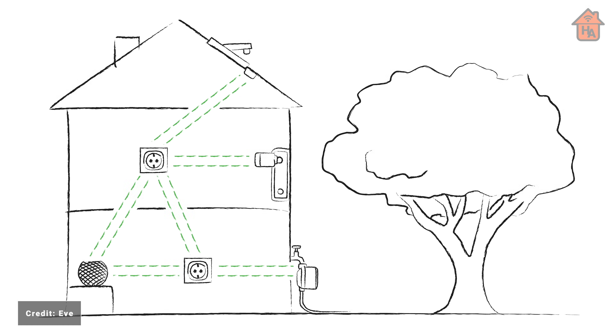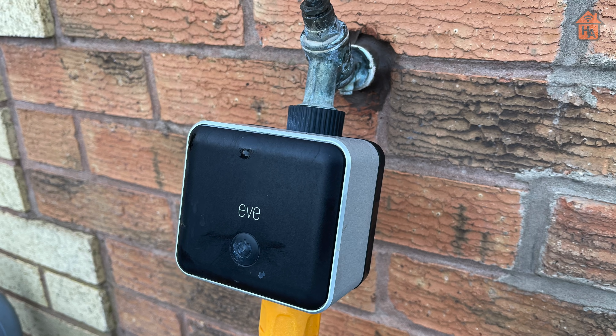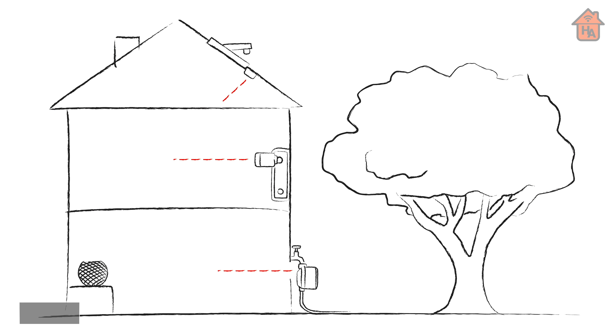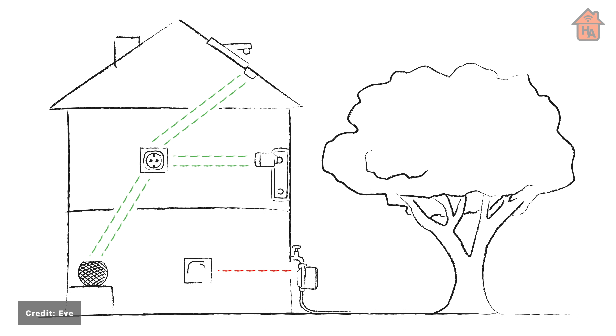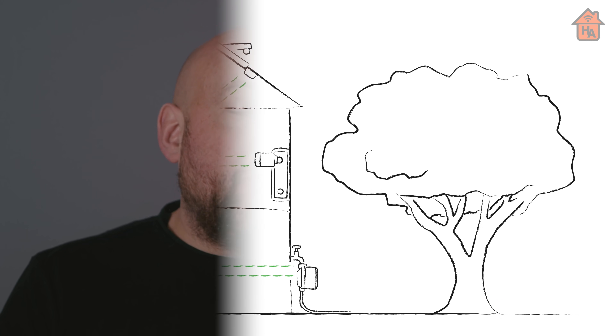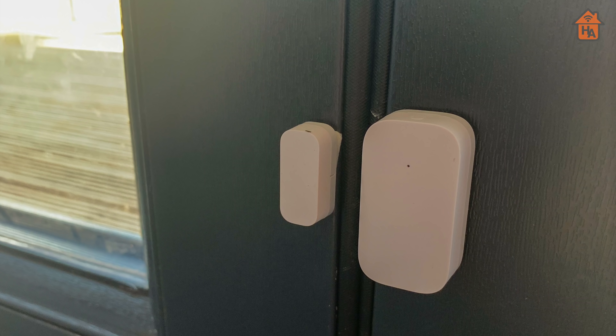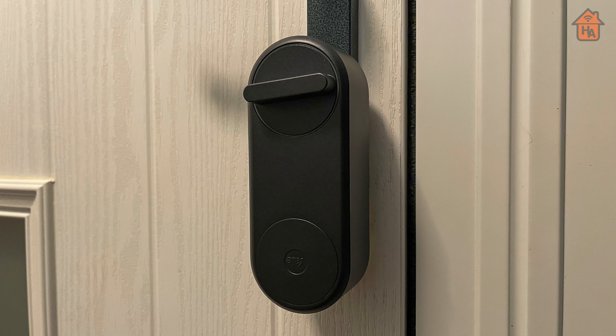A Thread network expands automatically as you add more accessories. For example, if you have an Eve Aqua beyond reach of your HomePod Mini, an Eve Energy somewhere in the middle could connect the Eve Aqua to the Thread network. While Wi-Fi and Bluetooth become unreliable and unresponsive the more devices you add — like a Wi-Fi network slowing during a family gathering — a Thread network is totally different. The more Thread devices connected, the more stable and robust it becomes. Thread also has low power consumption, great for battery-operated devices such as motion sensors and door locks, allowing them to last much longer.